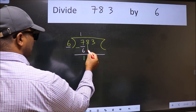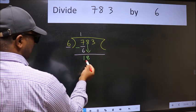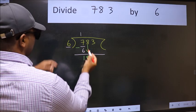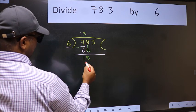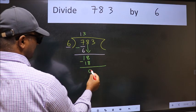After this, bring down the beside number. So 8 down. When do we get 18 in 6 table? 6 times 3 is 18. Now we subtract. We get 0.